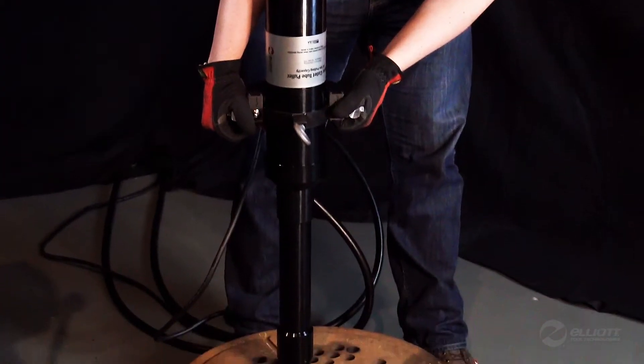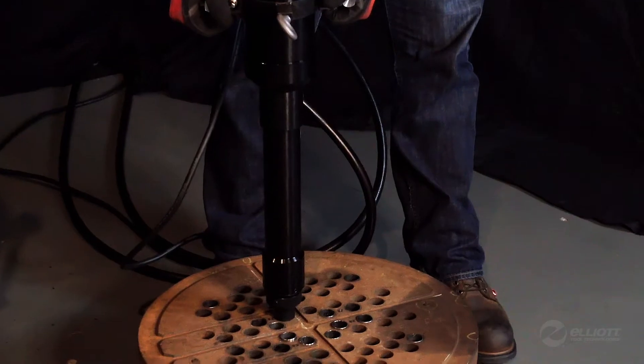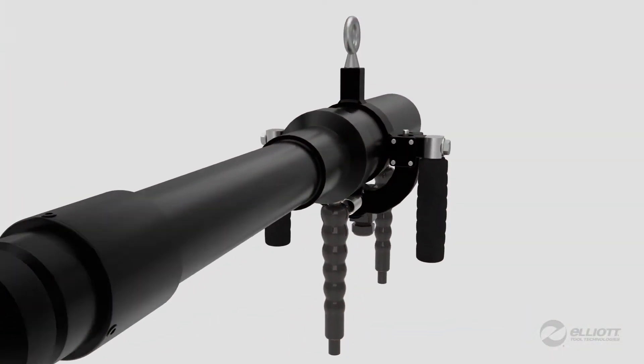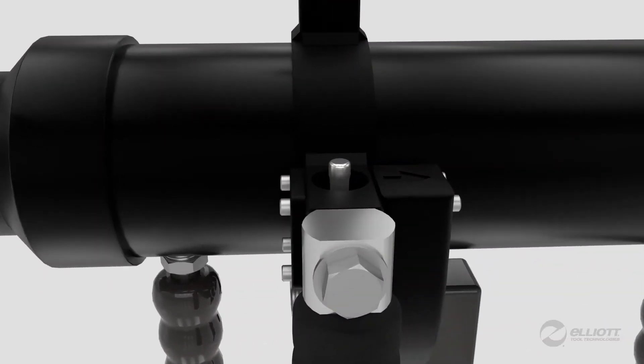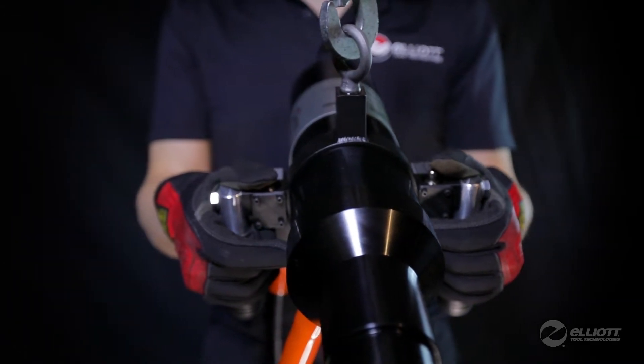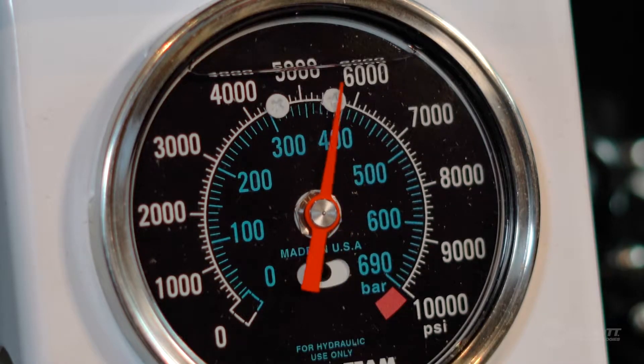Don't risk damaging the tube sheets from drilling and tube knockout tools. With convenient pump controls built into the handles, the SuperCollet Tube Puller works seamlessly with Elliott's electric hydraulic pumps.